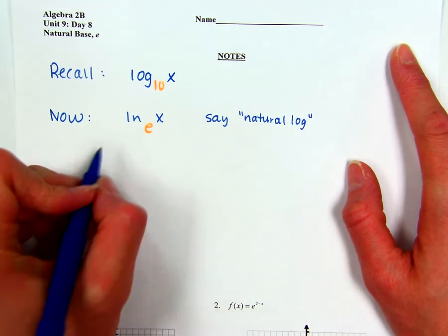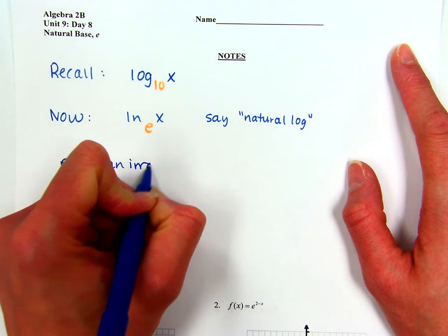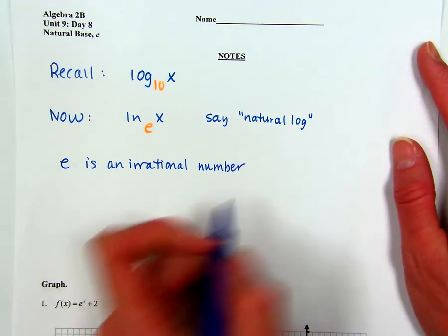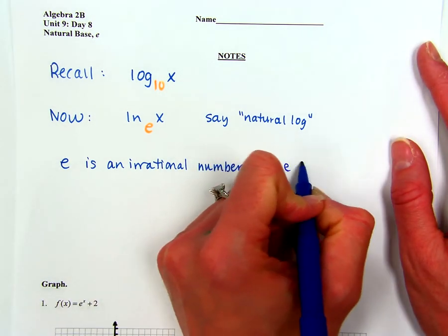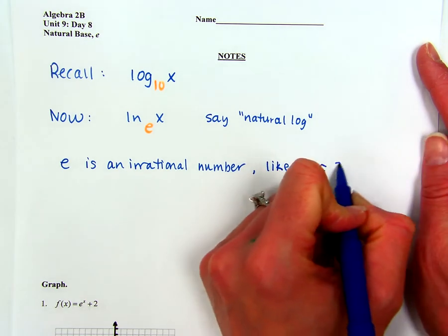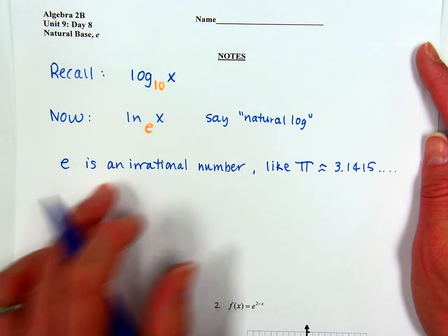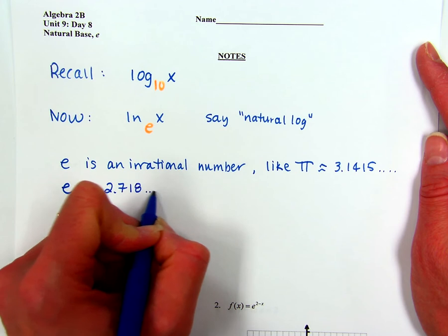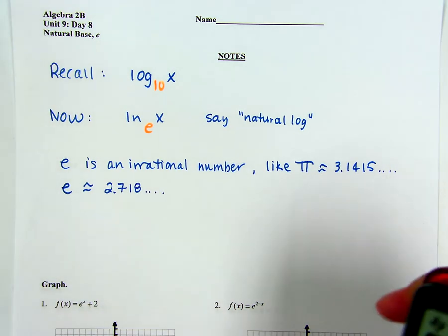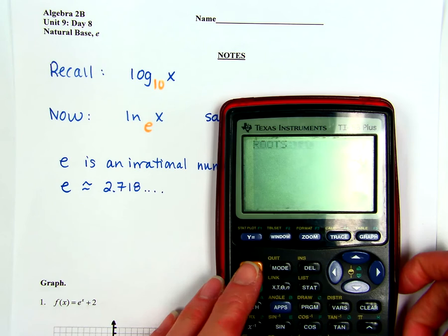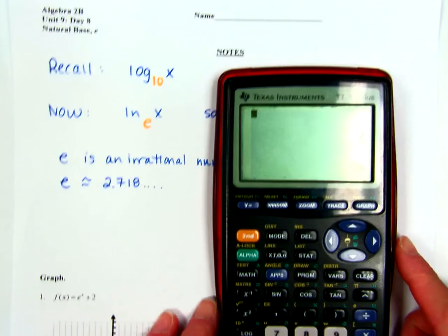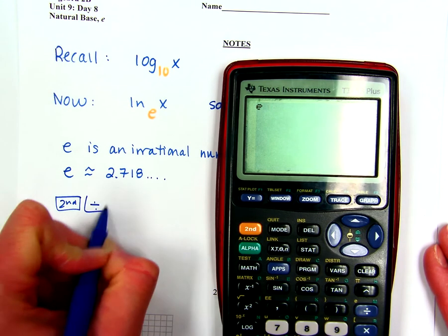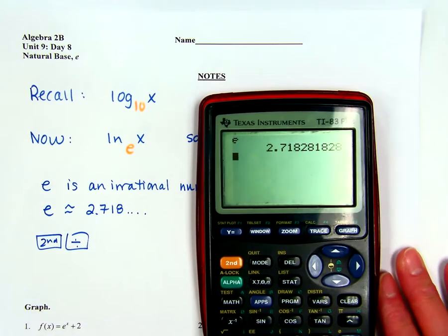So what is E? E is an irrational number. You're kind of familiar with irrational numbers like pi, which is approximately 3.1415 and goes on forever. Well, just like that, E is approximately 2.718 and so on. You can find this button on your calculator — go to your calculator, there are two places. Second and then the division key will give you E, and you can see a decimal approximation for E.